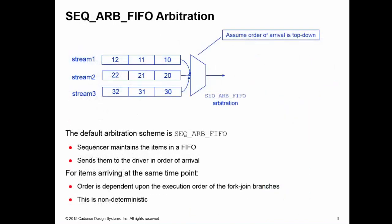Let's have a look at the FIFO arbitration mechanism. I have three streams of data passing information down to my sequencer. The items at the head of the queue are 10, 20 and 30. These are the next available items at my sequencer, and my sequencer has to select between one of these three items. The way the FIFO arbitration scheme works is that the sequencer simply maintains a FIFO of the items which are sent to it and then passes the items down to the driver in the order of arrival. This is the built-in default arbitration scheme.